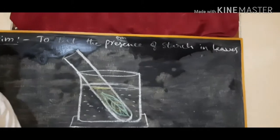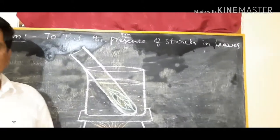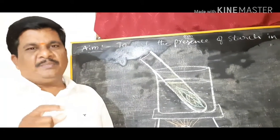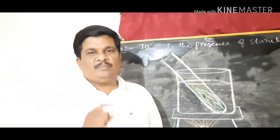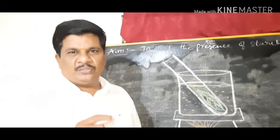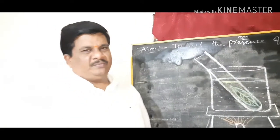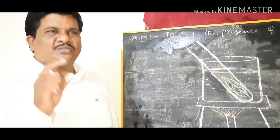Starch is formed in the leaves. Plants prepare food material during photosynthesis. That food material is glucose, which means carbohydrate. It is a soluble form. Plants store this glucose into insoluble form in their body parts, mainly in the leaves. In the leaves, the glucose is converted into starch and stored.